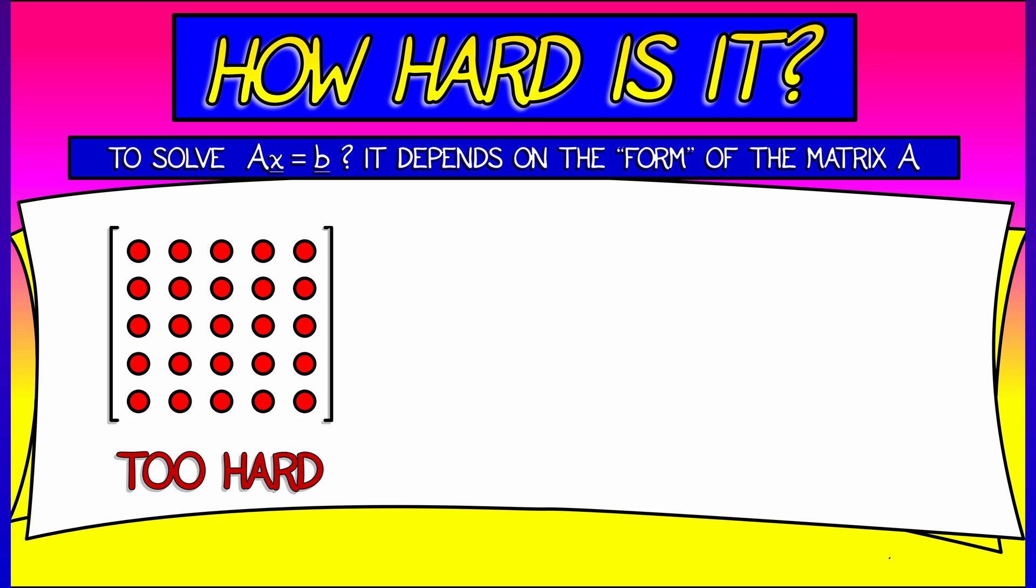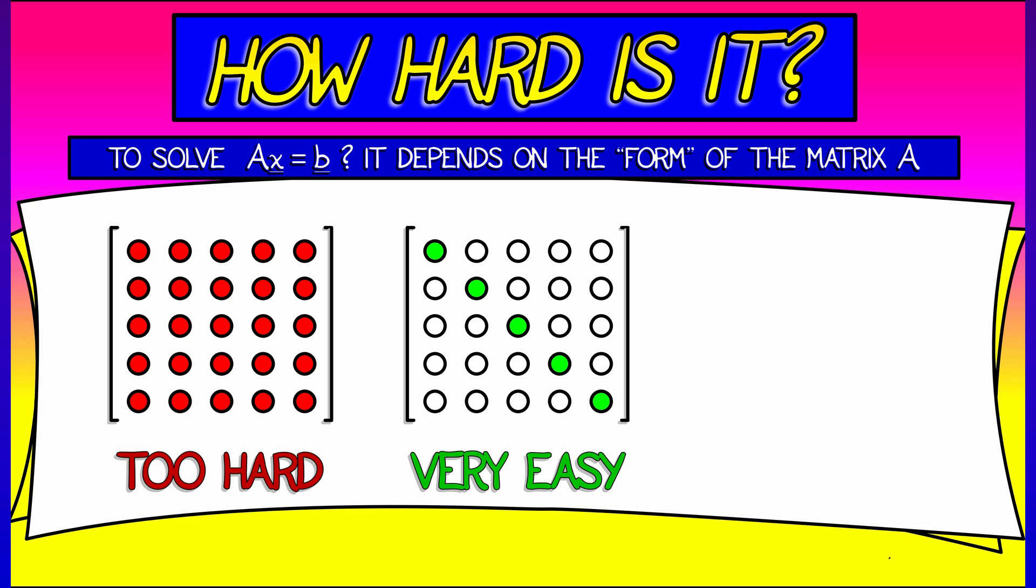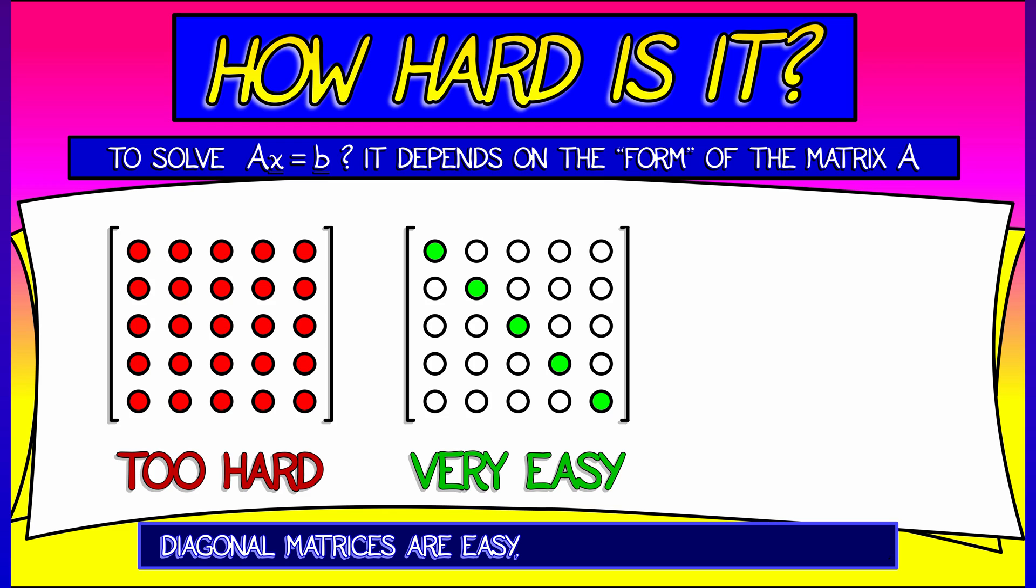However, there are certain forms of matrices that are nice. Consider a diagonal matrix, where you've got zeros except along the diagonal. Then this is going to be really easy to solve. If we just read off the equations, each equation just involves one unknown. And that's easy.